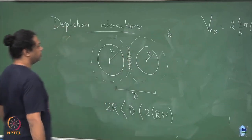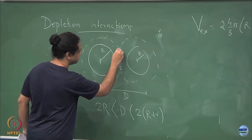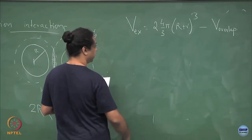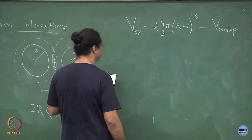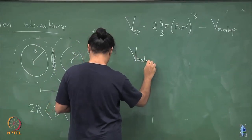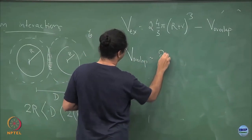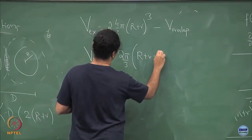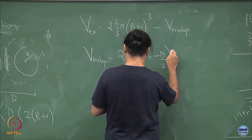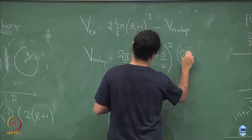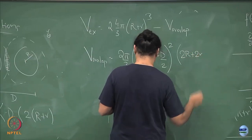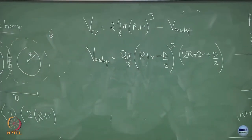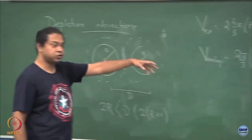The overlap volume is simply 2 times the volume of a spherical cap. Using the standard formula for the spherical cap, the overlap volume works out to (2π/3)(R+r − D/2)² × (2R + 2r + D/2). That is 2 times the spherical cap volume, which you can look up or derive from standard geometry.